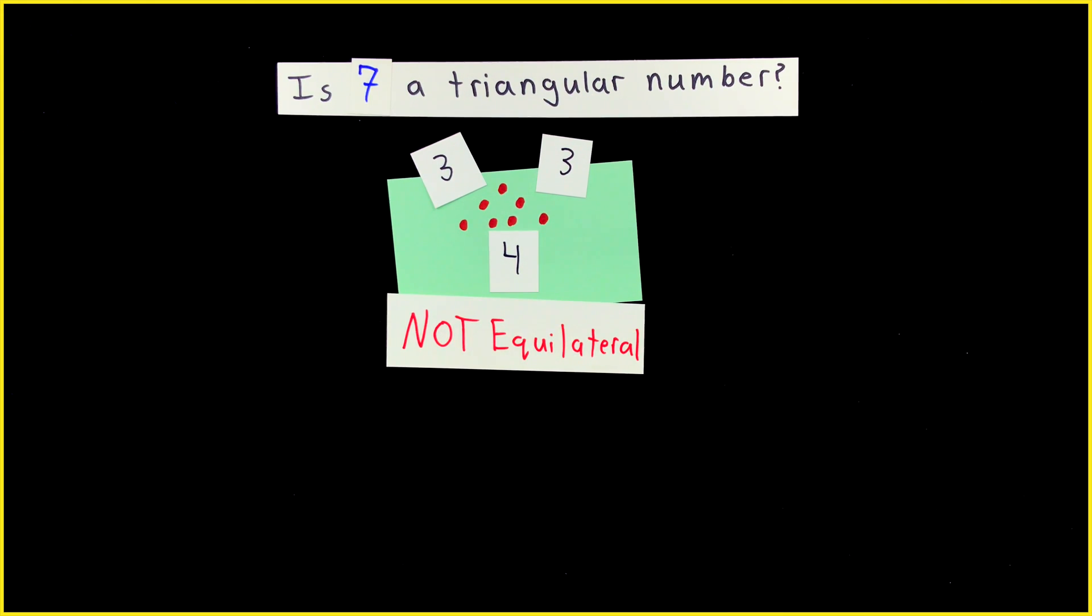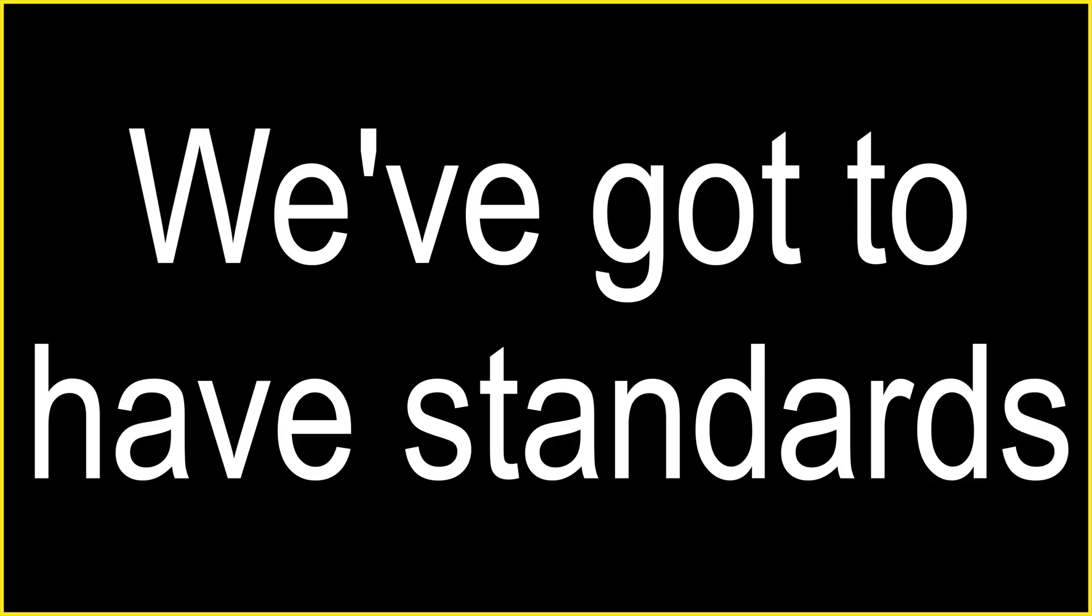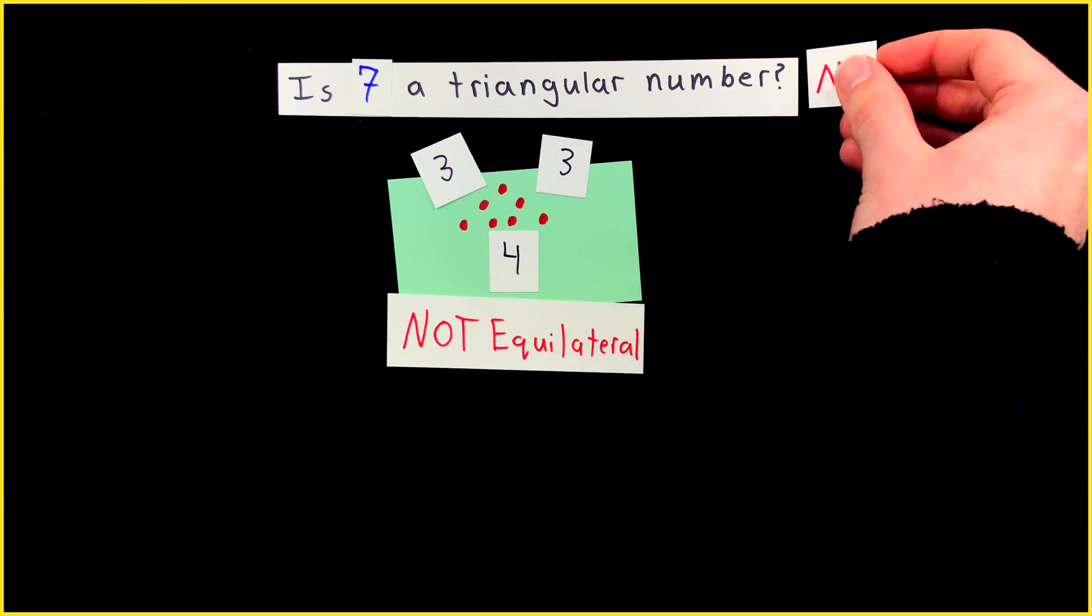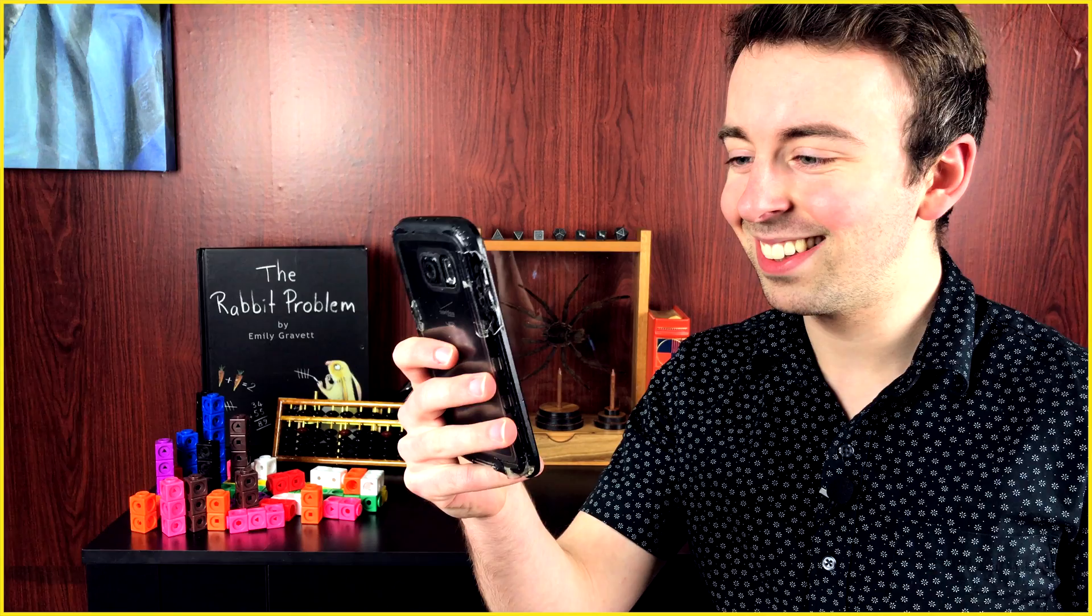As in, not all of its sides have the same length. I mean, come on. If we're gonna call numbers triangles, we gotta have some standards. Turns out, seven isn't a triangular number. It's not? I knew this phone number was fake!